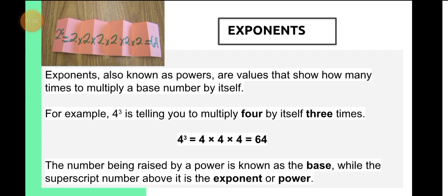Exponents are also known as powers. These are values that show how many times to multiply a base number by itself, and we have covered this in our past discussions. For example, 4 raised to the power of 3 is telling you to multiply 4 by itself 3 times, so 4 raised to the power of 3 equals 4 times 4 times 4, which is 64. The number being raised by a power is known as the base, while the superscript number above it is the exponent or the power.